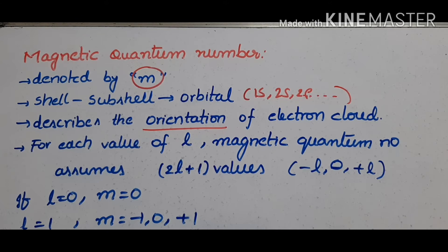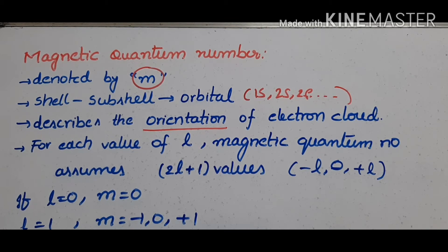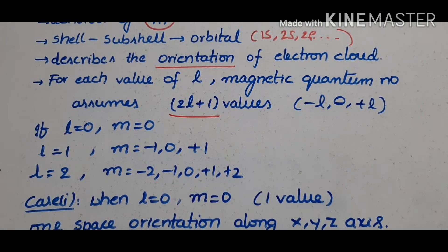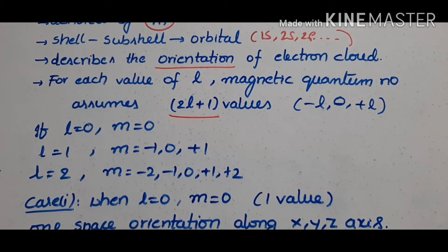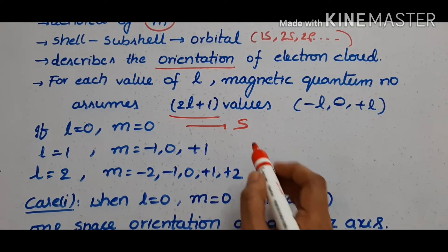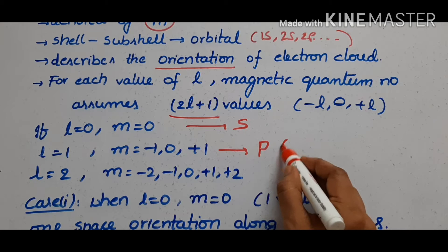In order to get the particular address of an electron, the principal, azimuthal, and magnetic quantum numbers are all interlinked. For each value of L, the magnetic quantum number has 2L+1 values, ranging from minus L to 0 to plus L. If L equals 0, M will be 0 — only one value, which corresponds to the s orbital. If L equals 1, M equals minus 1, 0, plus 1 — that gives 3 values, corresponding to the p orbital with 3 orientations.